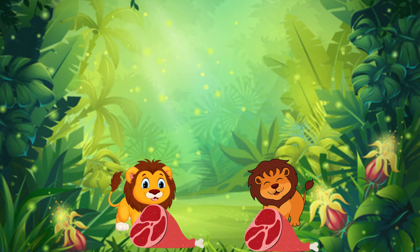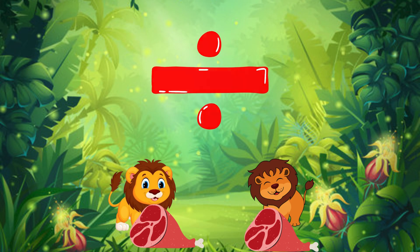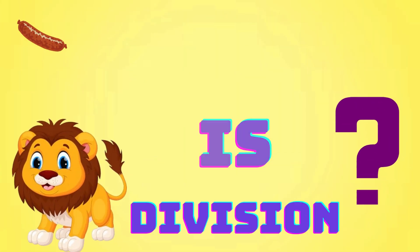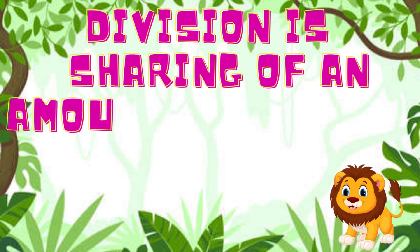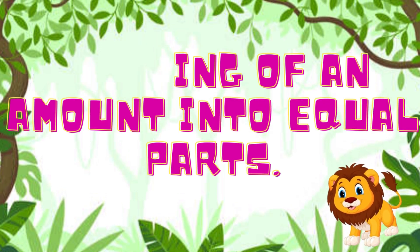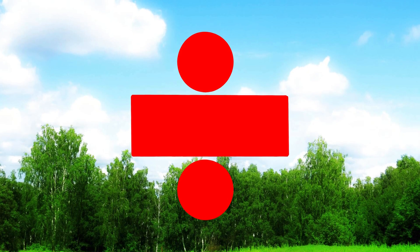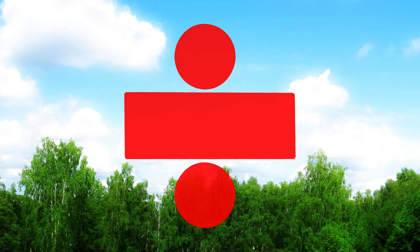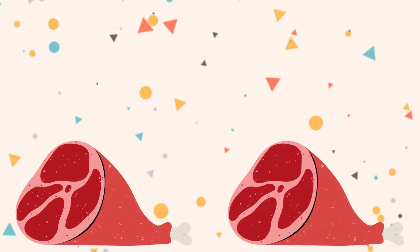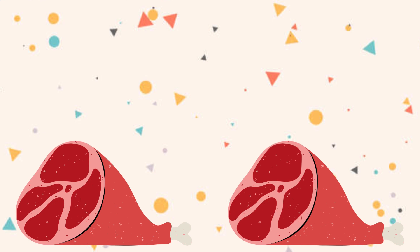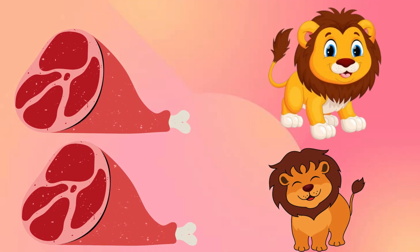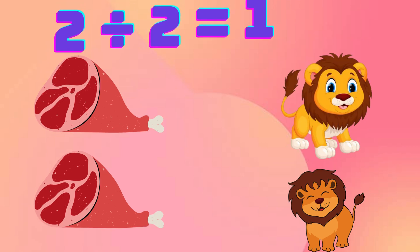Do you know we just divided? But what is division? Division is the sharing of an amount into equal parts. This is the division sign. There were two pieces of meat, which were split into two equal parts, leaving each lion with a piece of meat. This means two divided by two is one.